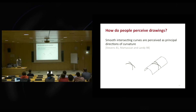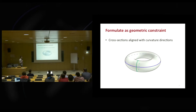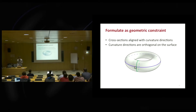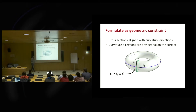Thanks to both sources of information we can now be confident that cross-sections are aligned with directions of curvature, and we can start doing math, geometry, and optimization because we know a lot about curvature directions. Very simply, we know that principal curvature directions are orthogonal on the surface. So whenever we observe two intersecting cross-sections in a drawing — even though their 2D angle is not 90 degrees — we know that in 3D they should be orthogonal, and we can formulate that as a constraint for 3D reconstruction.